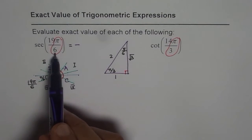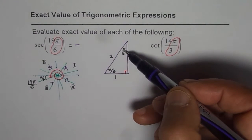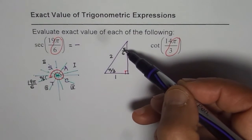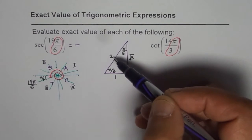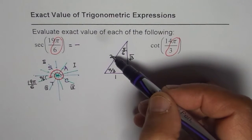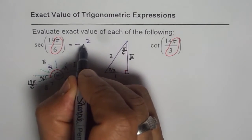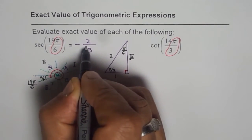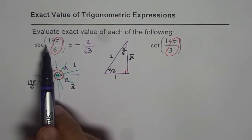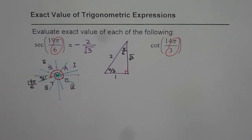Now related acute angle is π by 6. So cos of π by 6 is square root 3 over 2. So secant will be 2 over square root 3. So we have 2 over square root 3 as the value of secant 19π by 6. I hope you understand and appreciate it.